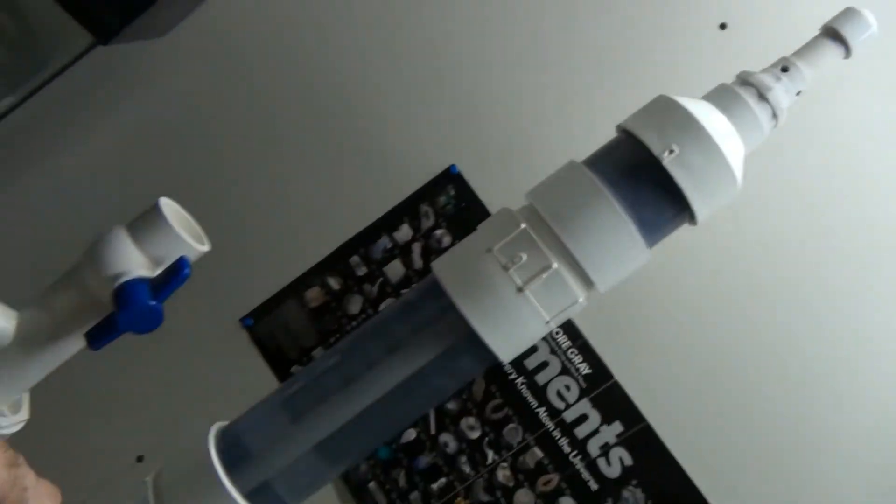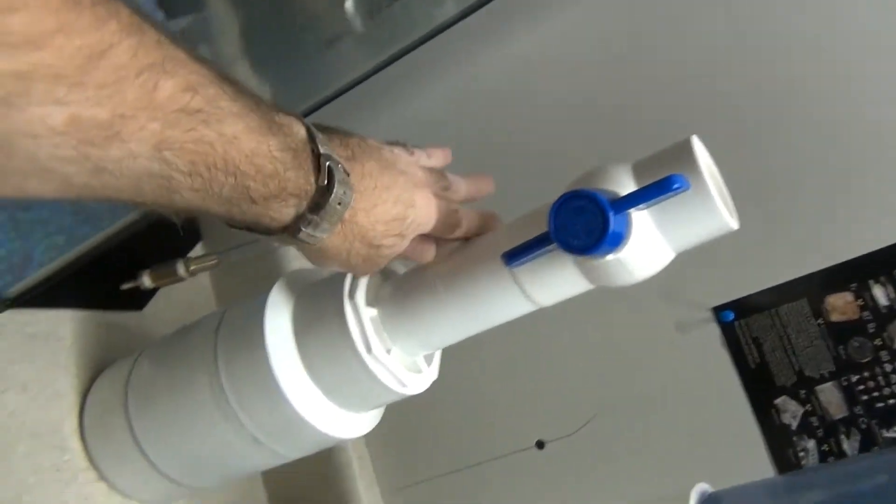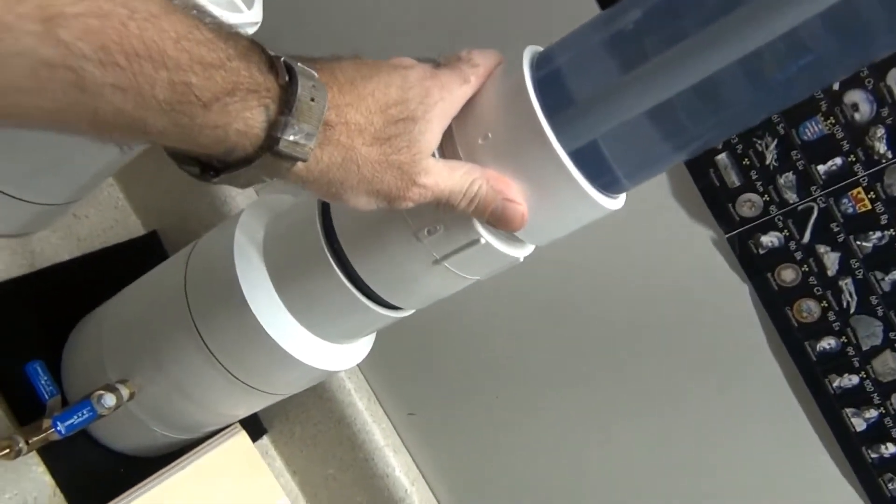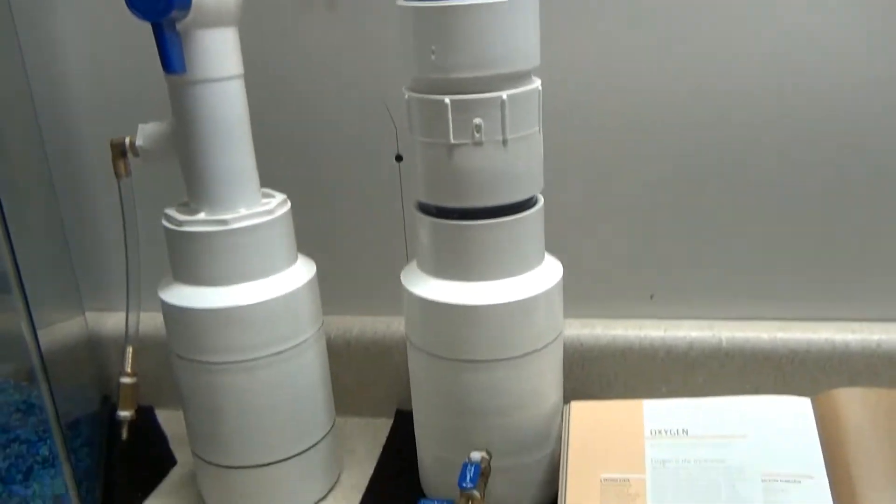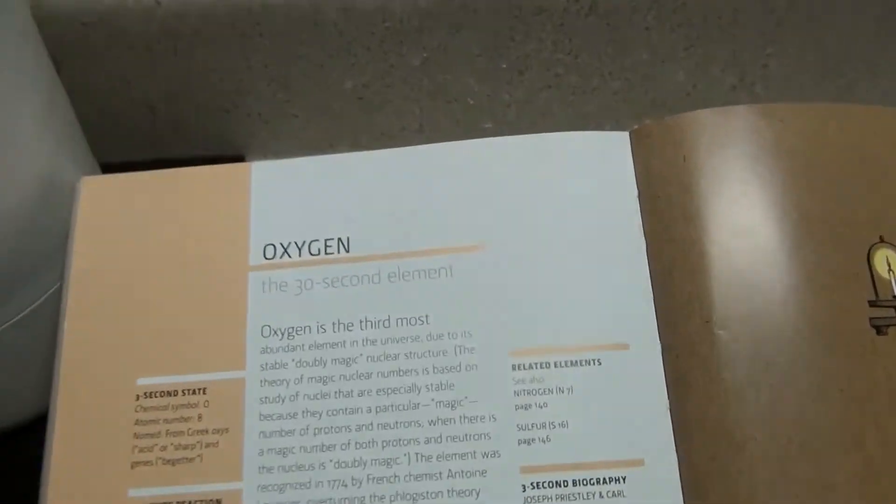We're going to use a bubbler for safety. I'm going to go ahead and hook this hydrogen generator directly up to one of my reactor cores that's just full of distilled water. So no oxygen.